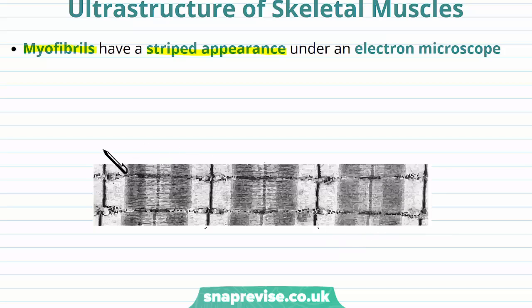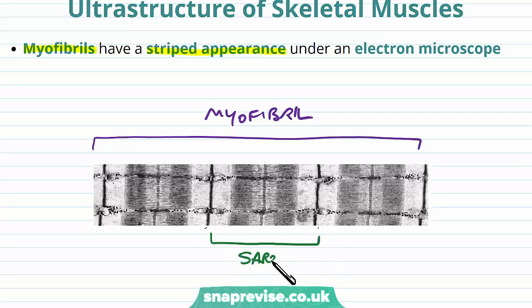So here's an electron microscope image of part of a myofibril, and you can see these repeating units of kind of bands and stripes. And each one of these is known as a sarcomere. So one myofibril is going to have lots of sarcomeres along its length, and therefore a muscle cell has lots and lots of sarcomeres in its cell.